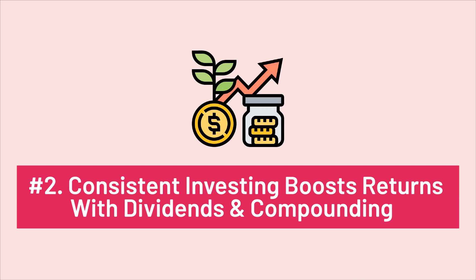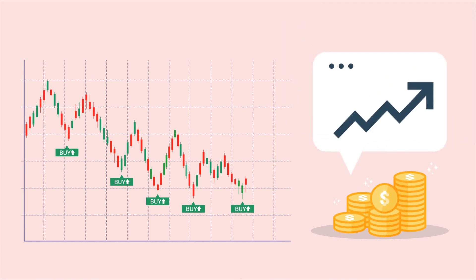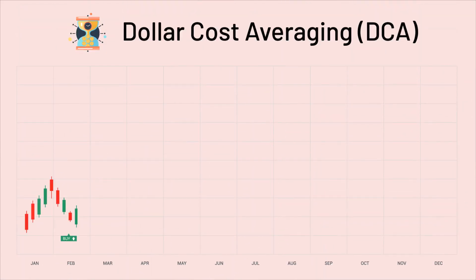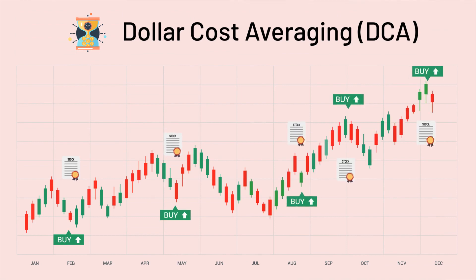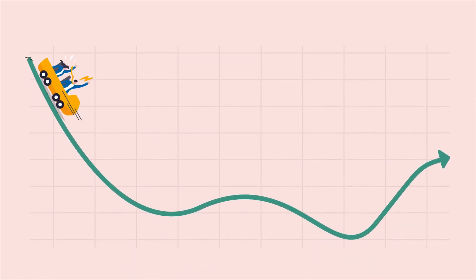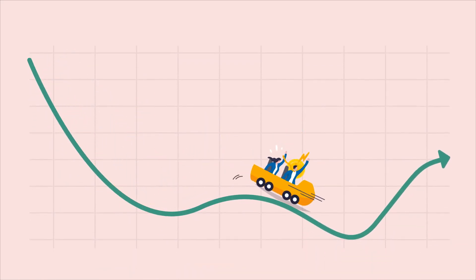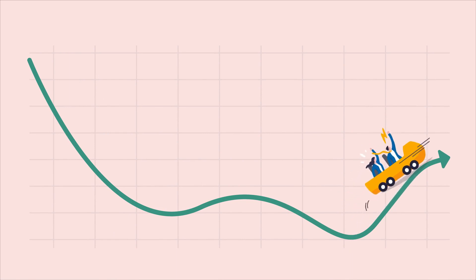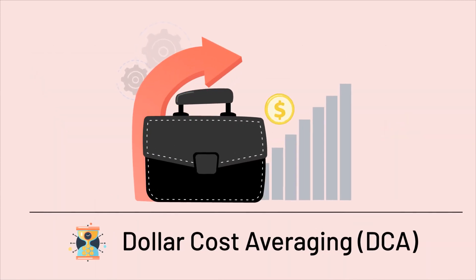Second: consistent investing boosts returns with dividends and compounding. Buying market securities when prices are declining ensures higher returns. Using the DCA strategy ensures that you buy more securities than if you had purchased when prices were high. Third: ride out market downturns. Investing periodic small amounts in declining markets assists in riding out downturns. The portfolio using DCA can keep a healthy balance and preserve upside potential to increase portfolio value in the long term.